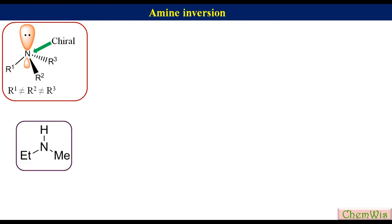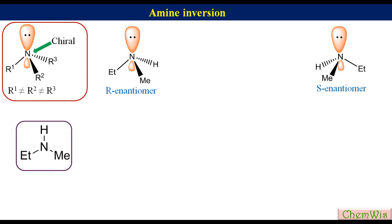Taking the example of ethylmethylamine: since this is a chiral amine, it would have a pair of enantiomers — the R enantiomer and the S enantiomer. Despite having a chiral nitrogen, it is optically inactive because the two enantiomers are rapidly interconvertible at room temperature and therefore always exist as a 50-50 enantiomeric mixture. This type of nitrogen is not considered to be a stereocenter.